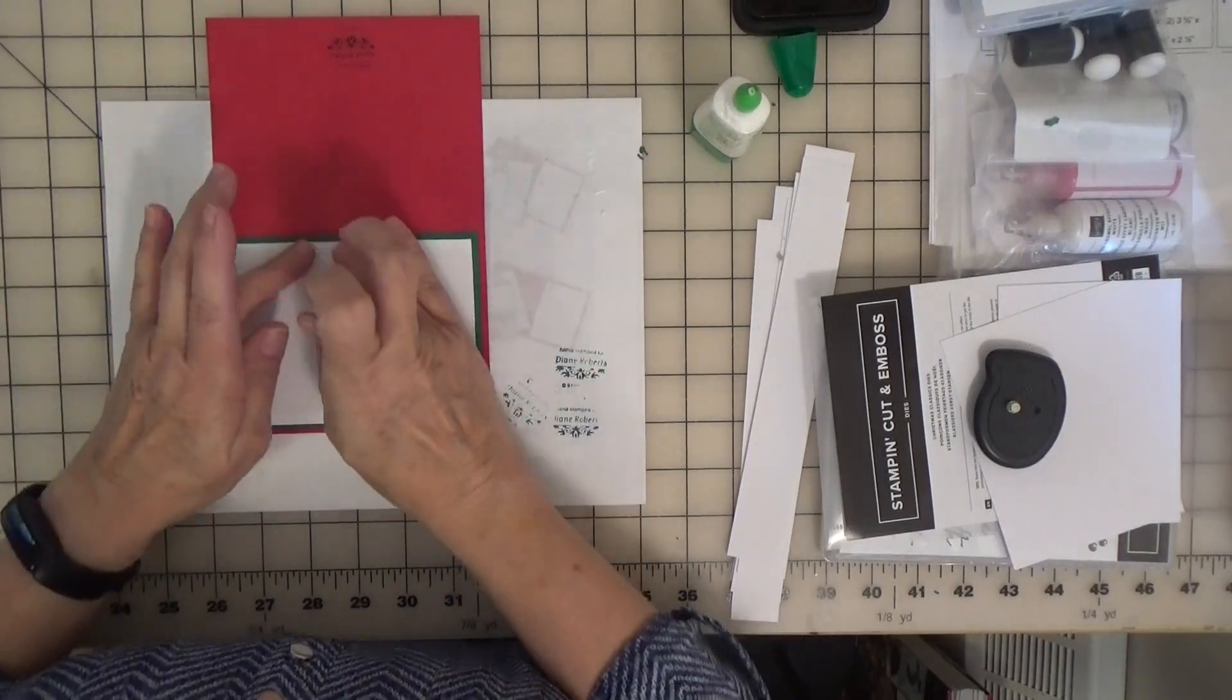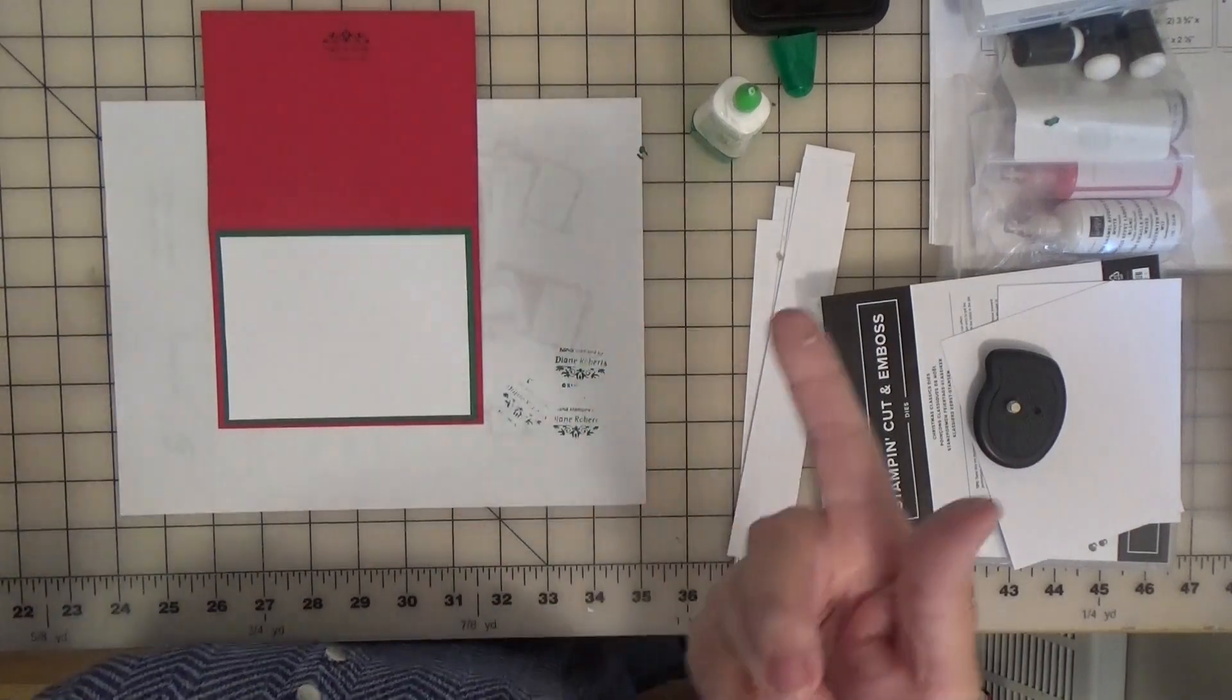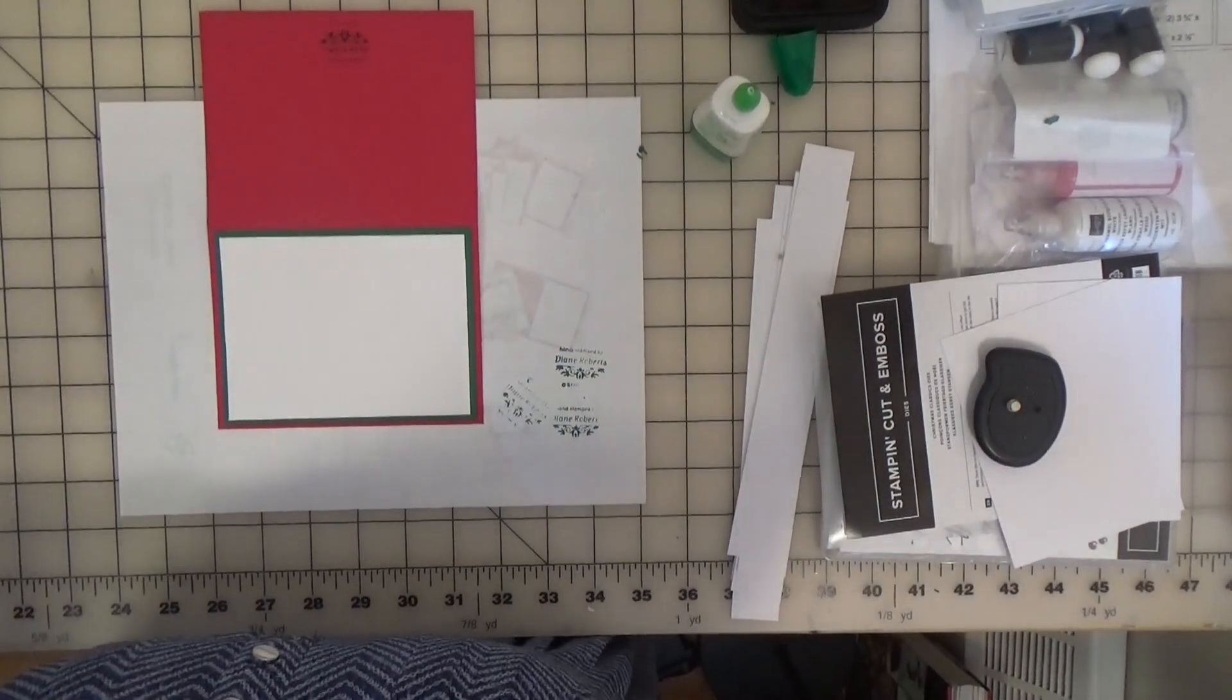Sometimes on camera it doesn't look real straight, but they are straight in person. Okay, so now we're going to make the inside of the card. Here's the outside of the card. We're going to put a piece of white on the inside with a greeting.